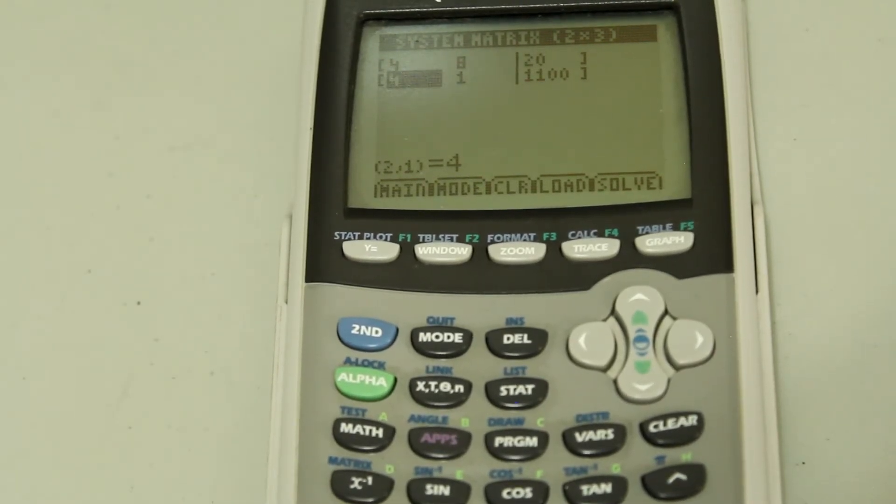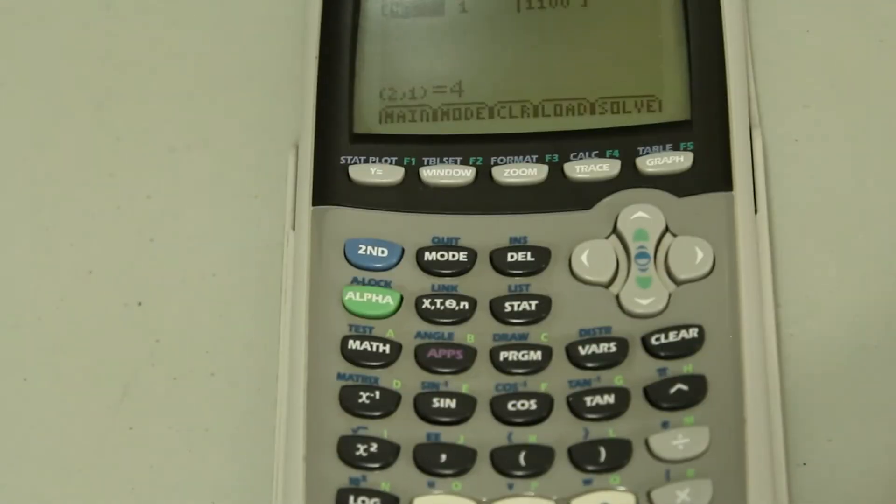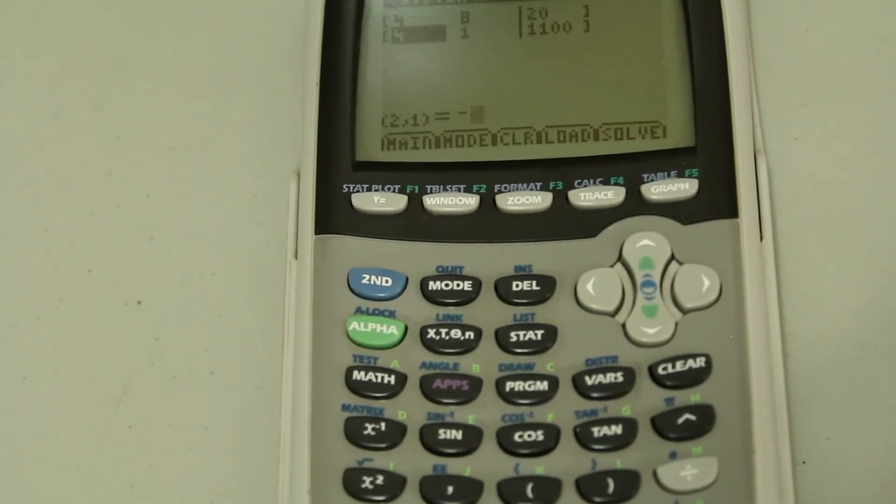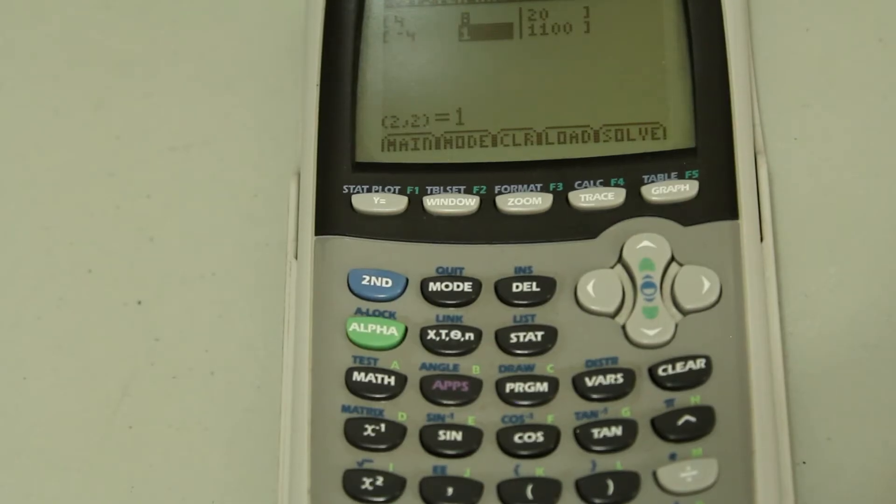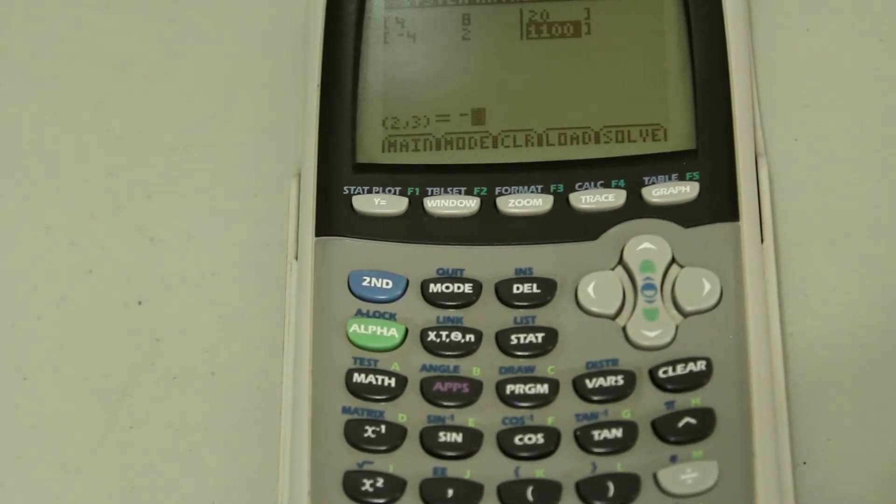And when you enter the negative, once again, use this negative sign, not the minus sign. So, negative 4 and 2 for the Y. And the constant was negative 30.